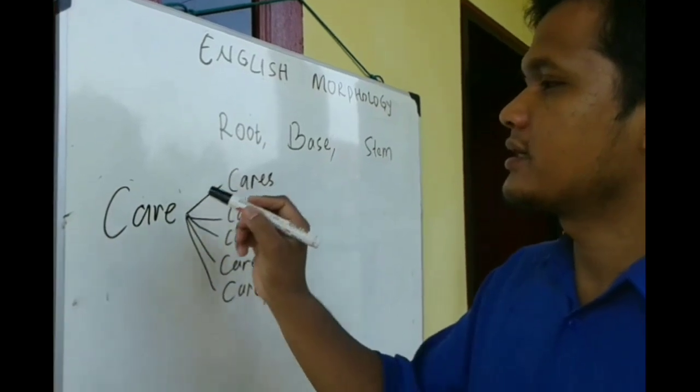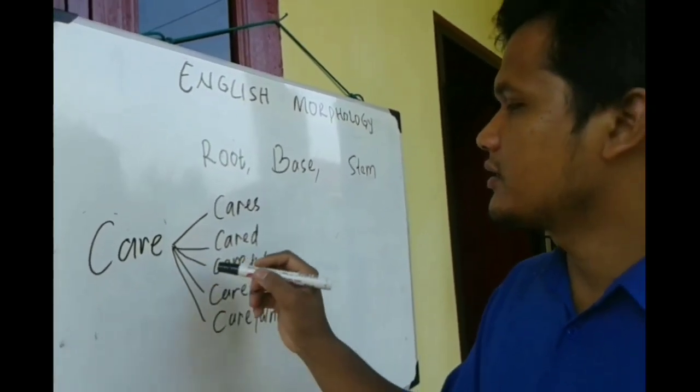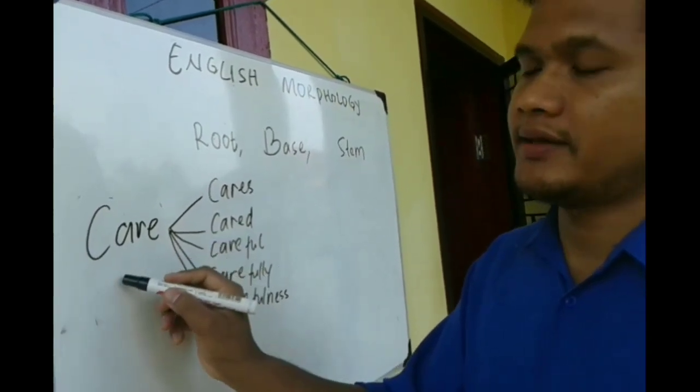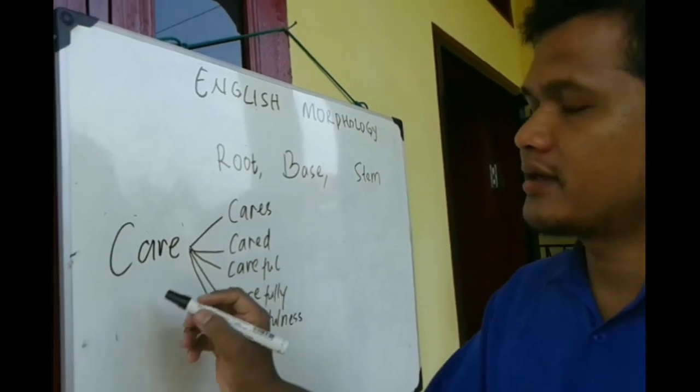So, what is the root for cares? Care. What is the root for care? Care. What is the root for careful? Care. What is the root for carefully? Care. What is the root for carefulness? Care.